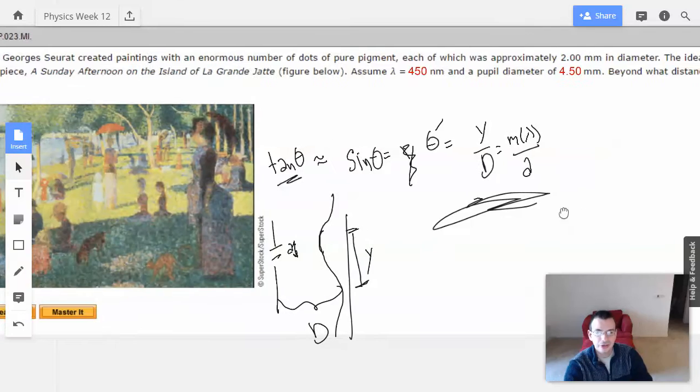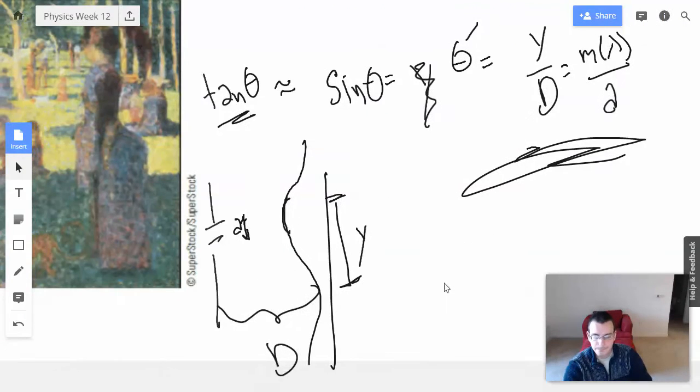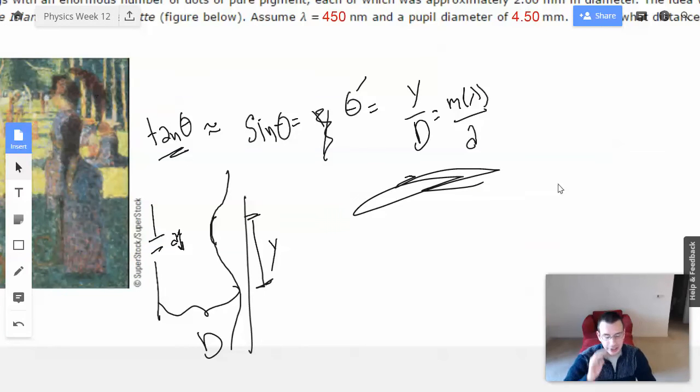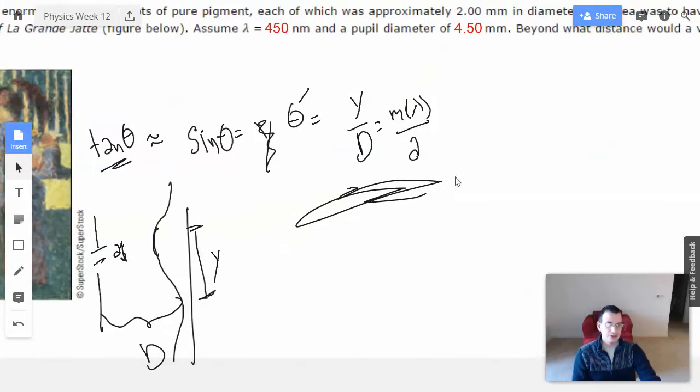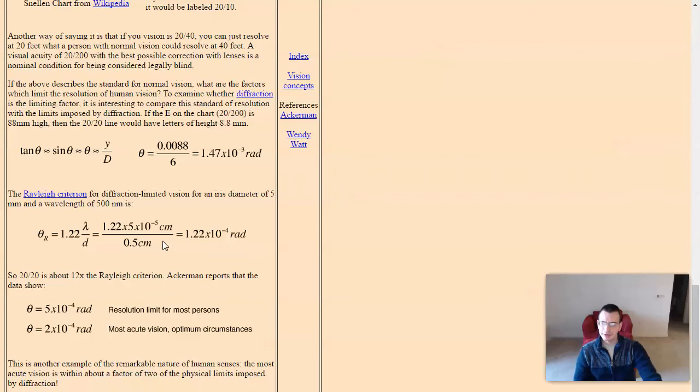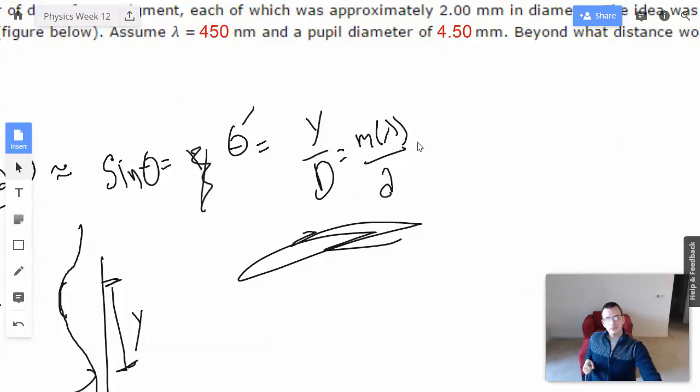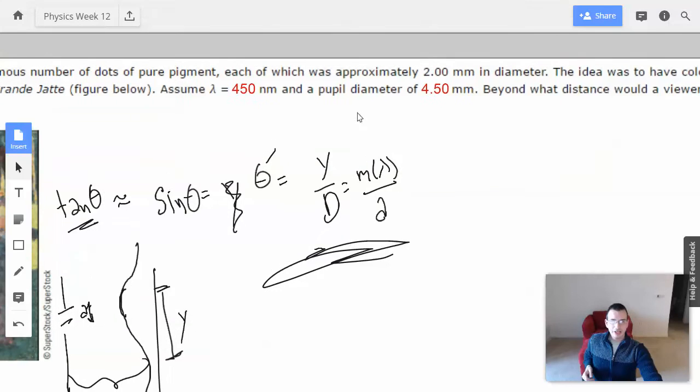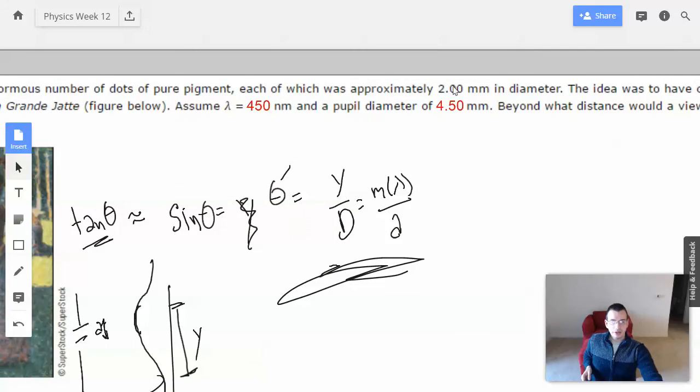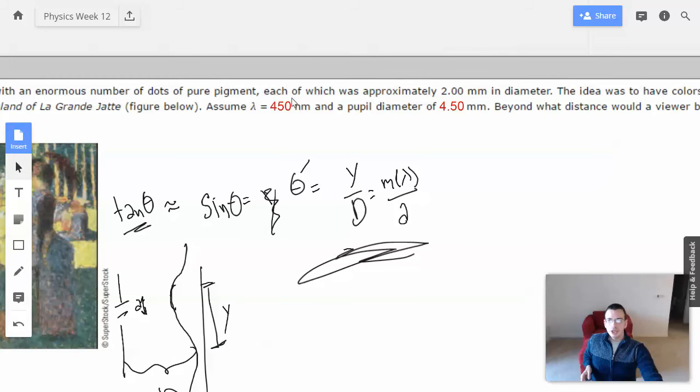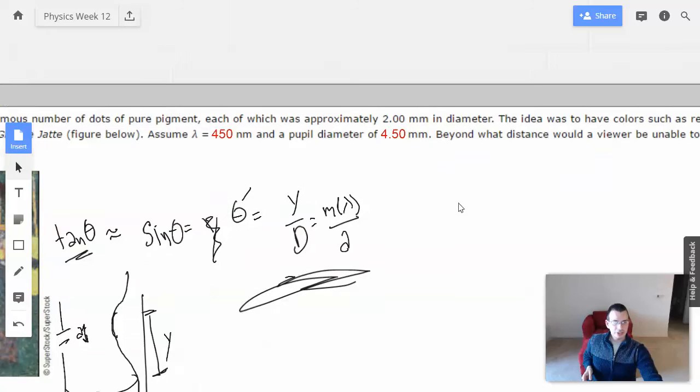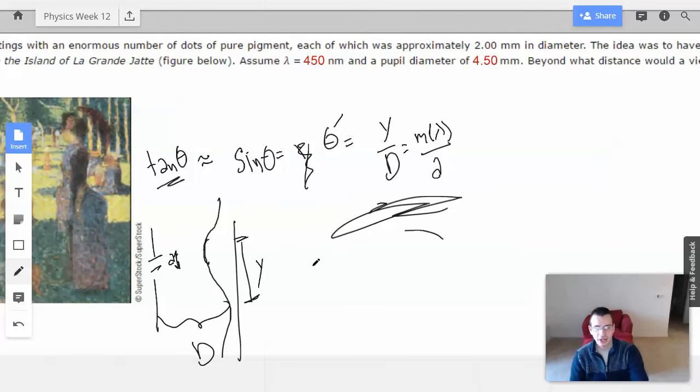To figure this out, we're looking for d. We have y over d, which is theta. The distance between the dots is going to be y. Each dot is approximately 2 millimeters in diameter. So I'm going to say the distance between the dots is 4 millimeters, so y equals 4 times 10 to the negative 3rd meters. Actually, I'll just write this down.